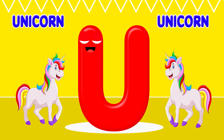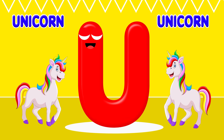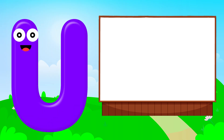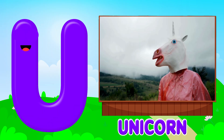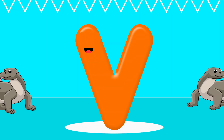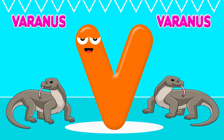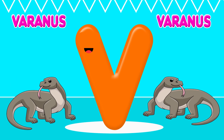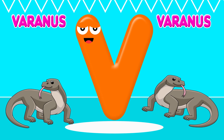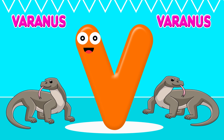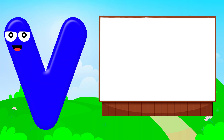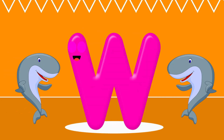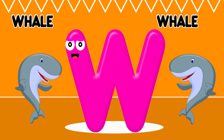U is for Unicorn. U, unicorn. U, unicorn. U, unicorn. V is for Varanus. V, varanus. V, varanus. V, varanus.